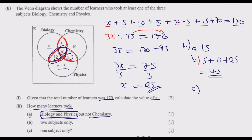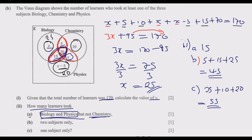Part C asks for learners who took exactly one subject. Those regions contain x (which is 25), 10, and x minus 5 (which is 20). Adding these: 25 plus 10 plus 20 gives 55. So 55 pupils took exactly one subject. This completes question one.